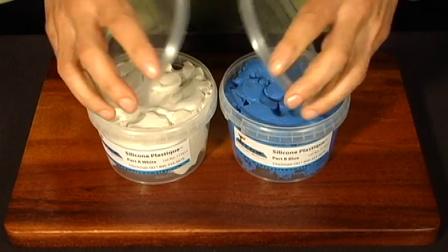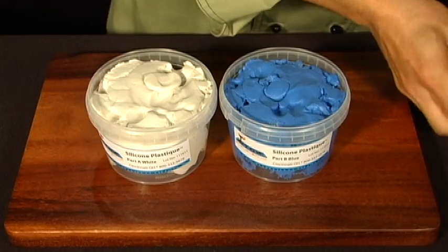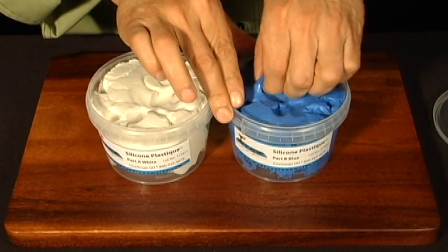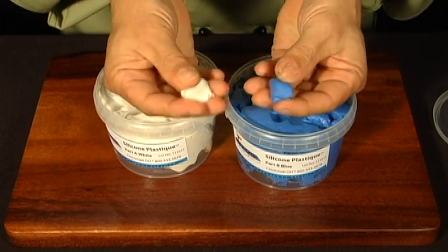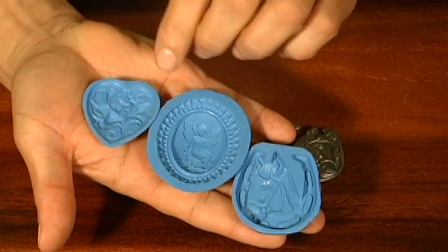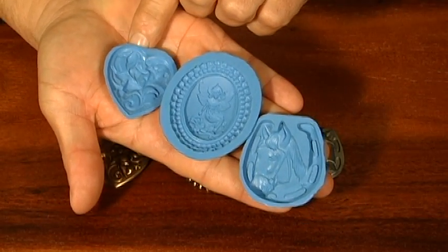Silicone Plastique is a two-part mold-making compound that can be mixed and applied by hand to almost any object in order to make a durable, food-safe mold that has great flexibility and commercial-grade toughness.